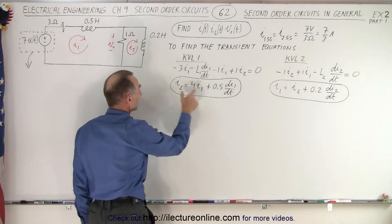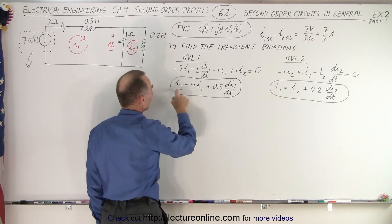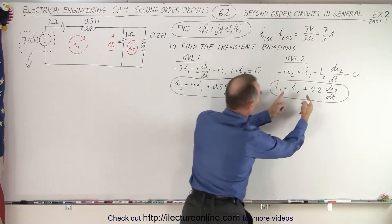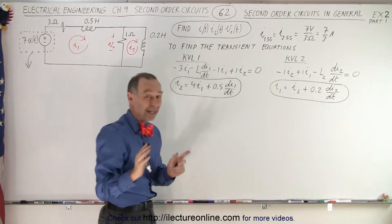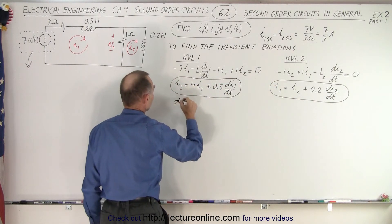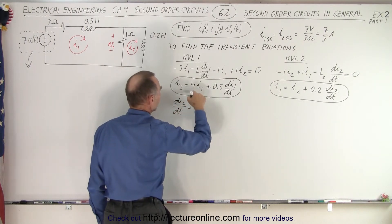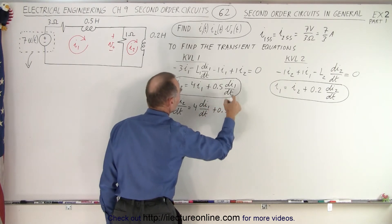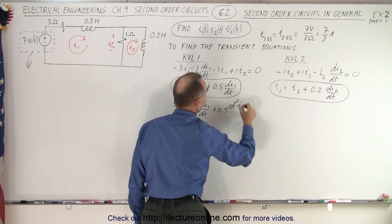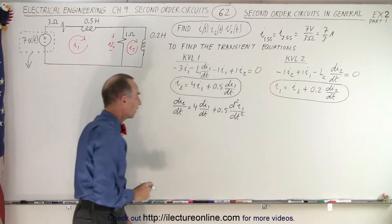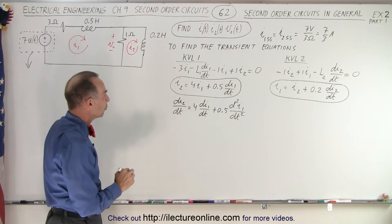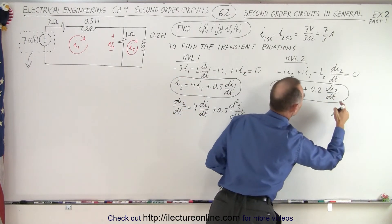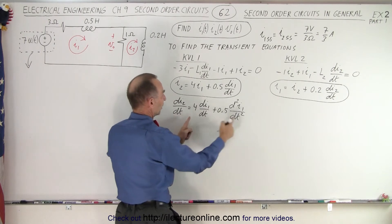Now we need to solve these equations simultaneously. We have I2 in terms of I1 from the first equation, so we can substitute. We also need the derivative: dI2/dt = 4·dI1/dt + 0.5·d²I1/dt². Then we substitute both I2 and dI2/dt into the second equation so we end up with an equation containing only I1.